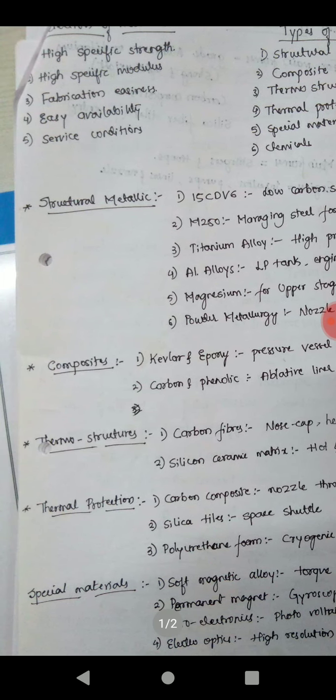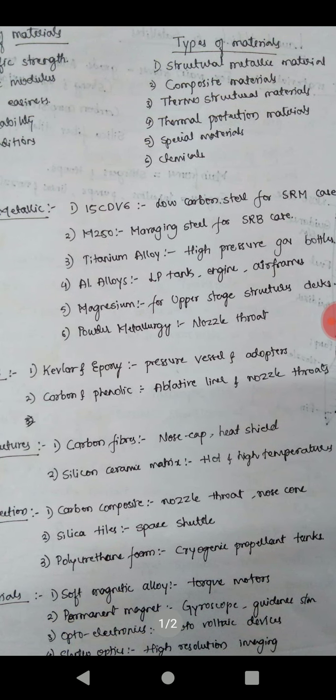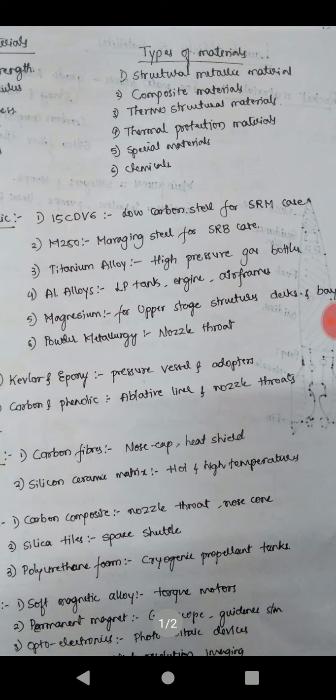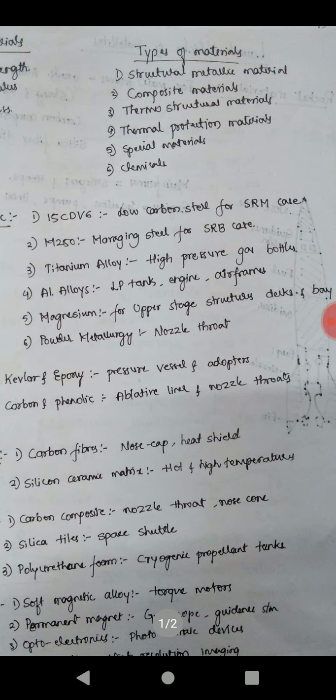Examples of structural metallics are 15CDV6, a low carbon steel for SRM case; M250 maraging steel for SRB case; titanium alloy for high pressure gas bottles; aluminum alloy for liquid propellant tanks, engines and airframes; magnesium for upper stage structures, decks and bays; and powder metallurgy for nozzle throats.